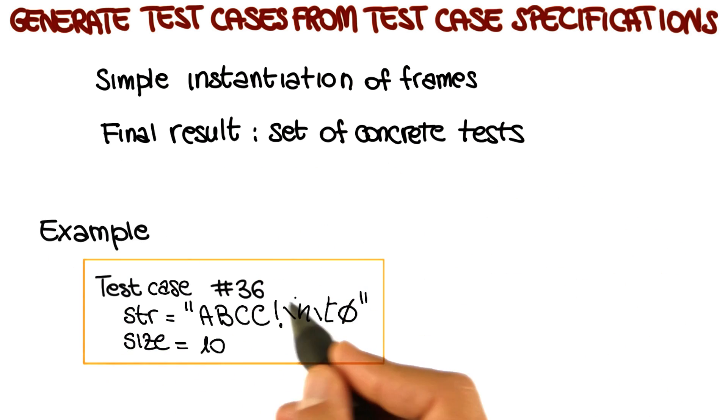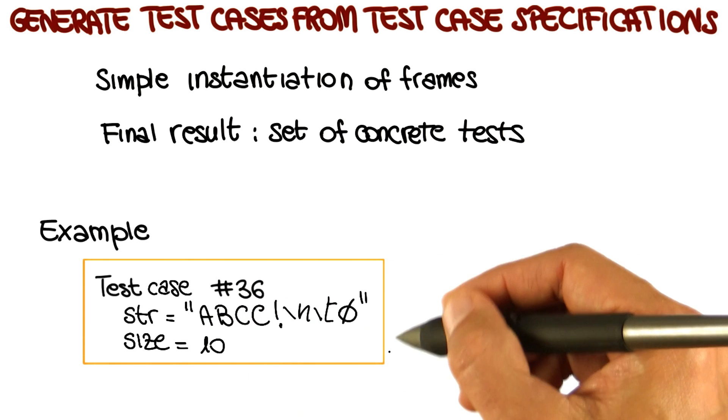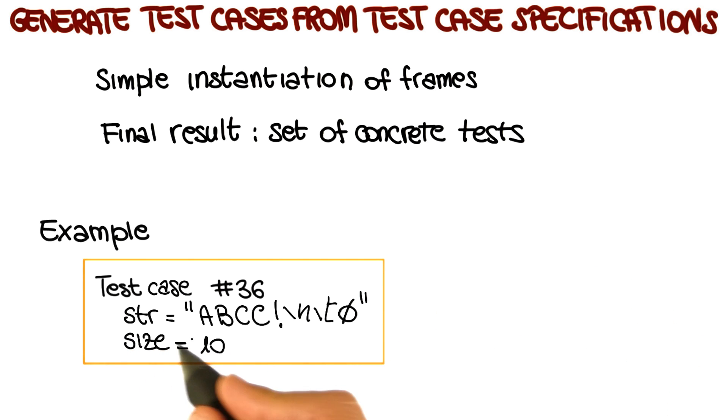For our example, test frame number 36 that we just saw, this will be the resulting test case which has the same ID so that we can track it, and that will specify concrete values, not just a specification for the input elements.